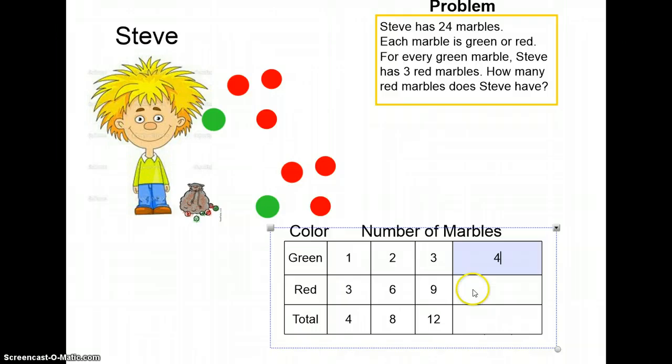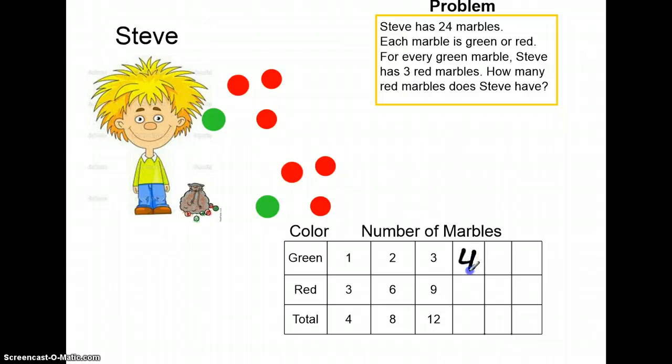If we have four marbles that are green, we're going to have 12 red marbles. That gives us 16 marbles total. So you'll notice a pattern.